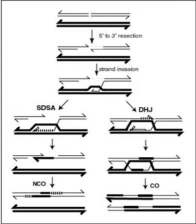One gene in a linked pair can sometimes be used as a marker to deduce the presence of another gene. This is typically used to detect the presence of a disease-causing gene. The recombination frequency between two loci observed is the crossing-over value — the frequency of crossing-over between two linked gene loci — and depends on the mutual distance of the genetic loci observed. For any fixed set of genetic and environmental conditions, recombination in a particular region of a linkage structure tends to be constant, and the same is true for the crossing-over value, which is used in the production of genetic maps.